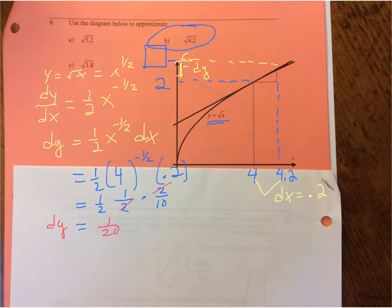1/20 can be written as 0.05. So in this region, I just found that dy is 0.05.